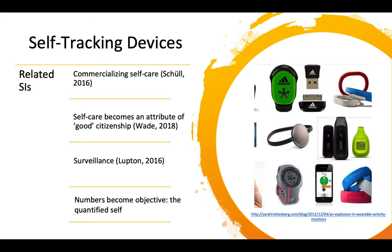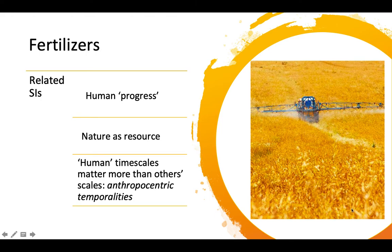Let us take another example. Fertilizers are a product of science and technology. What makes fertilizers so popular is that they ensure yield increase and plant growth. They are attached to imaginaries of human progress and nature as a resource to satisfy human needs. Fertilizers ensure human time scales matter more than other non-human scales. Science and technology are hence dominated by anthropocentric temporalities — a term that boils down to practices in science and engineering that privilege human time scales and immediate needs over the needs of non-humans and their related life cycles.